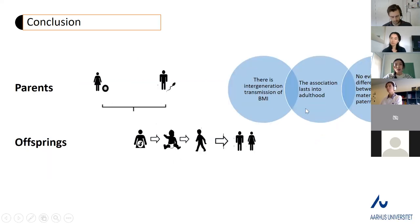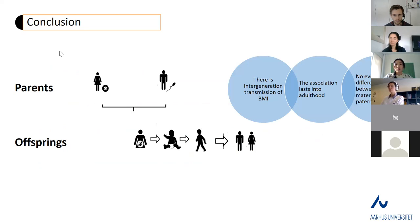To sum up, this study found evidence of intergenerational transmission of BMI, with the association lasting into adulthood. There is no evidence to suggest a difference between the maternal and paternal lines.